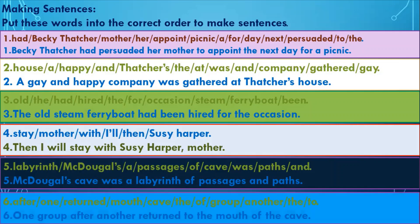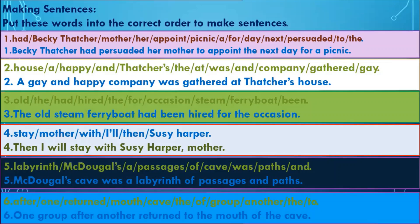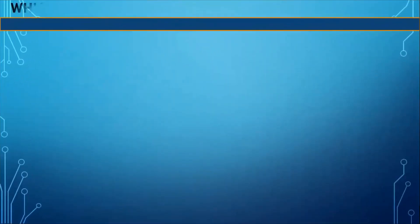Sixth rearranged sentence: 'One group after another returned to the mouth of the cave.' Next, we have to identify the character from the dialogues — who said those words, to whom, when, and where.